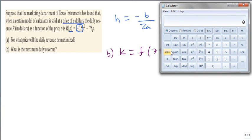Our calculator is -0.5 times 75 times 75 plus 75 times 75.